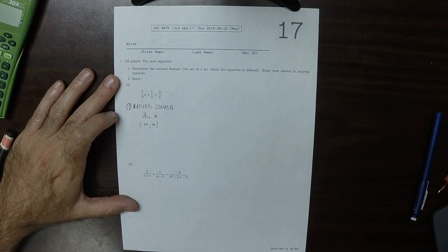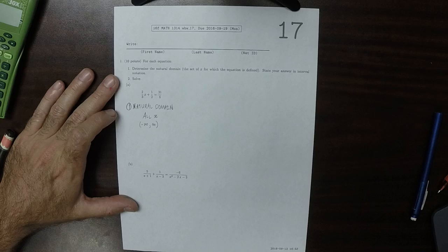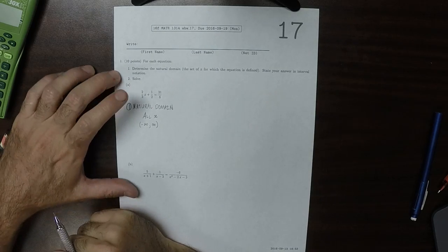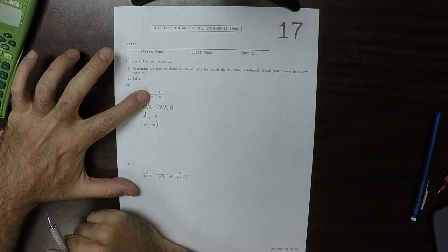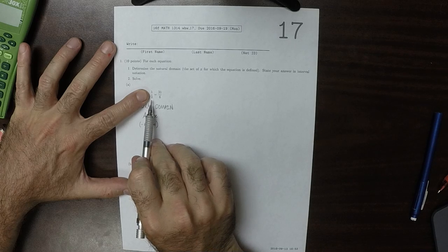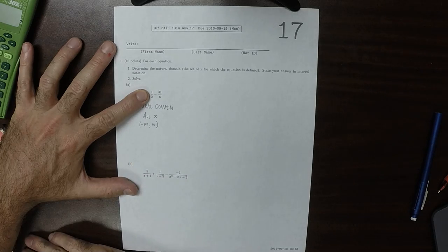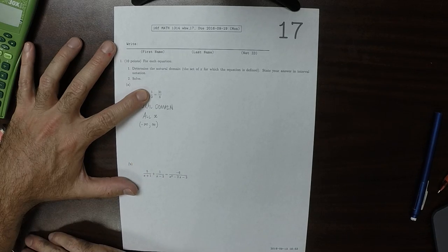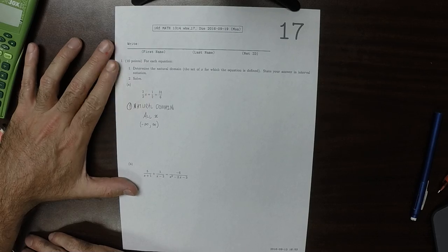Now, that doesn't mean that any x solves the equation. Because, for example, when x is 0, the equation reads, half is 31 over 6, which is an equation, but it's false. So 0 is not part of the solution.